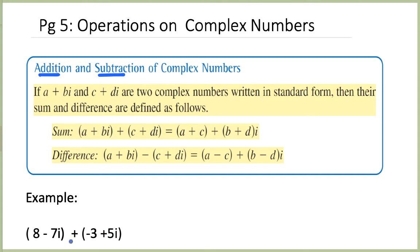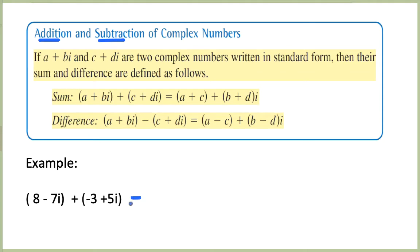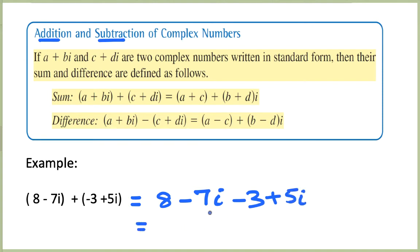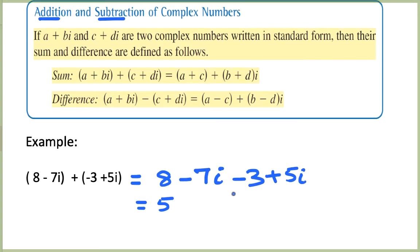Take (8 minus 7i) plus (minus 3 plus 5i). To add these, we add the constants and then add the imaginary parts together. So 8 minus 3 gives 5, and for the imaginary parts, negative 7i and 5i are like terms with the same variable i. Adding them gives minus 2i. So the result is 5 minus 2i.